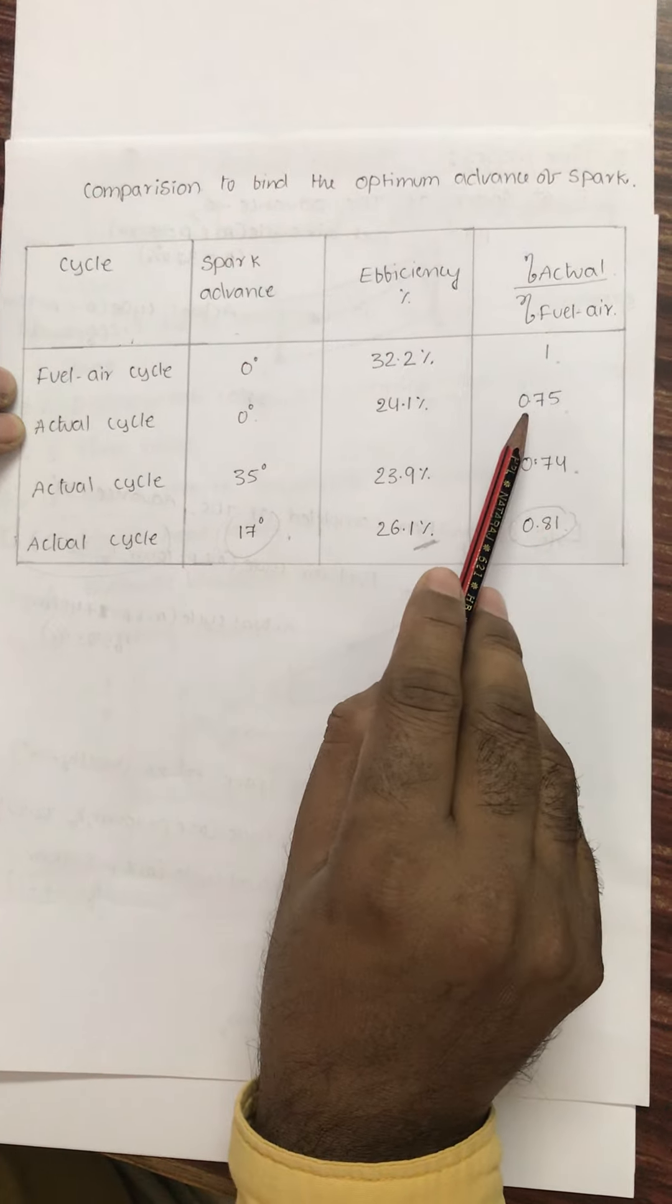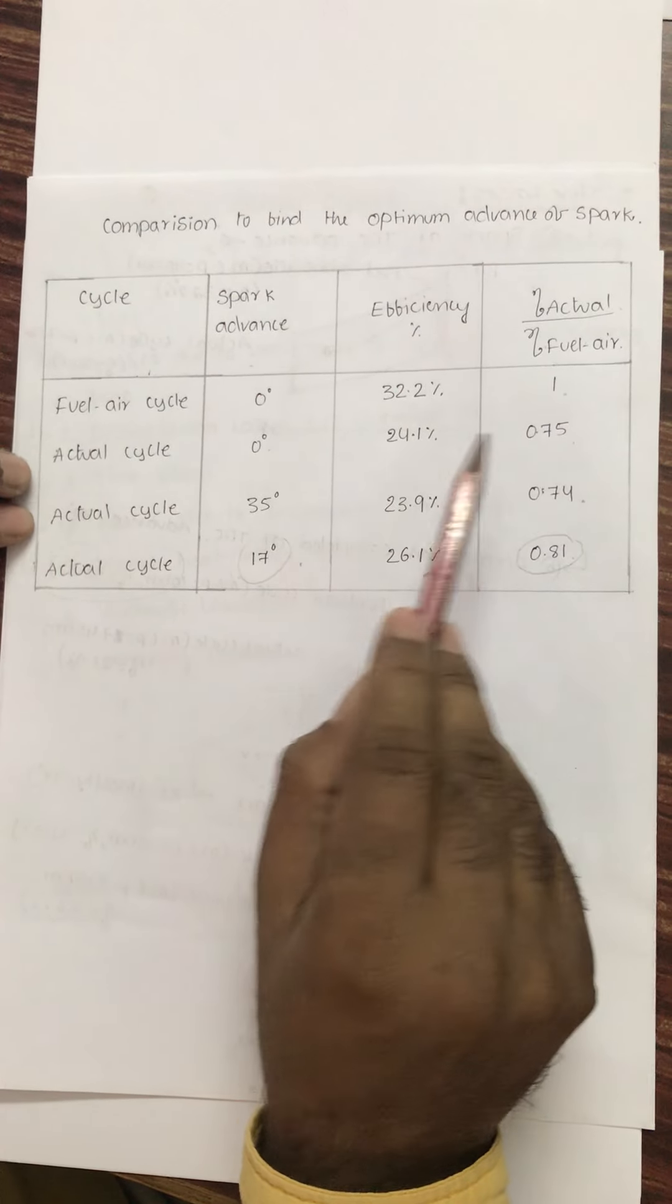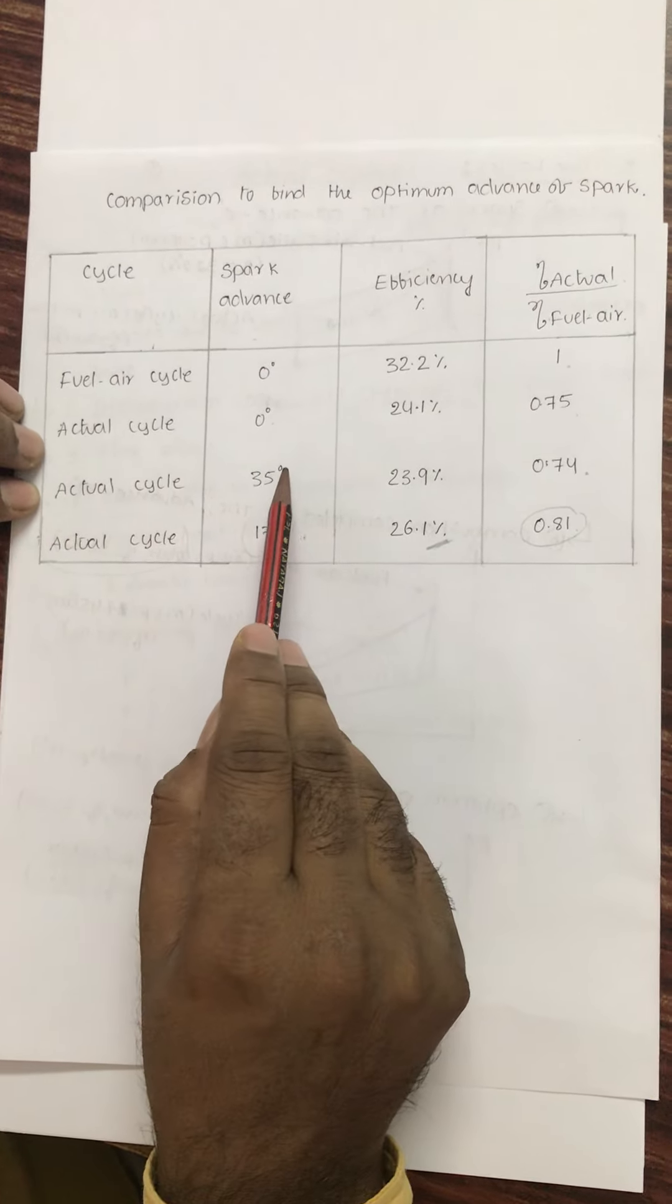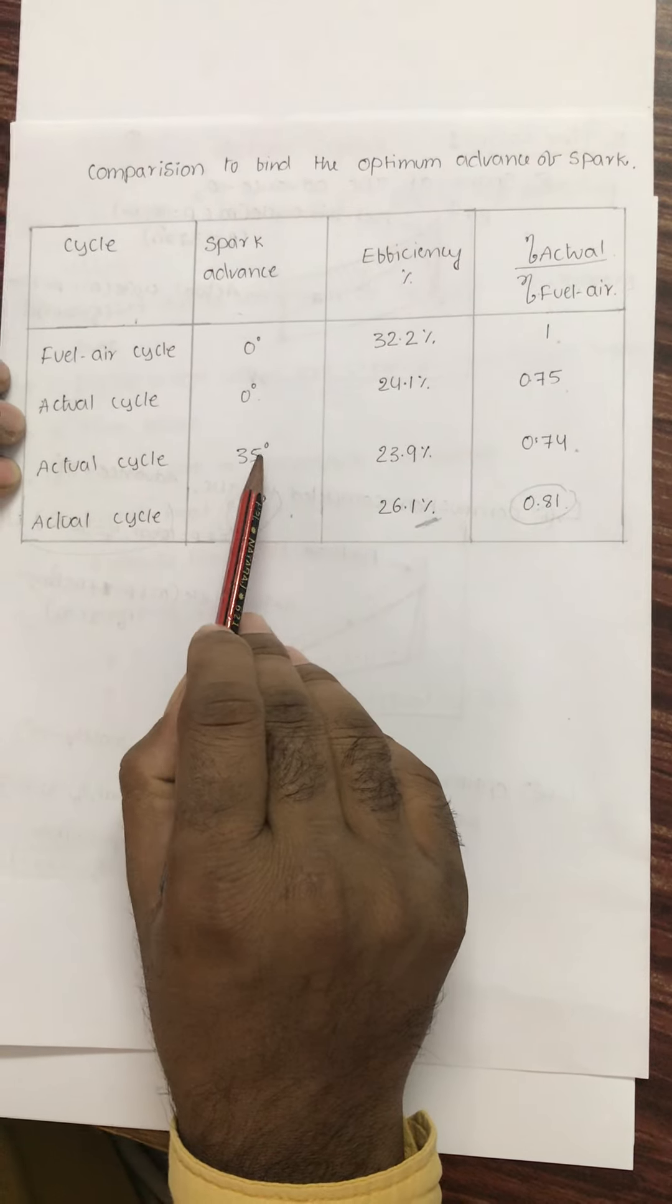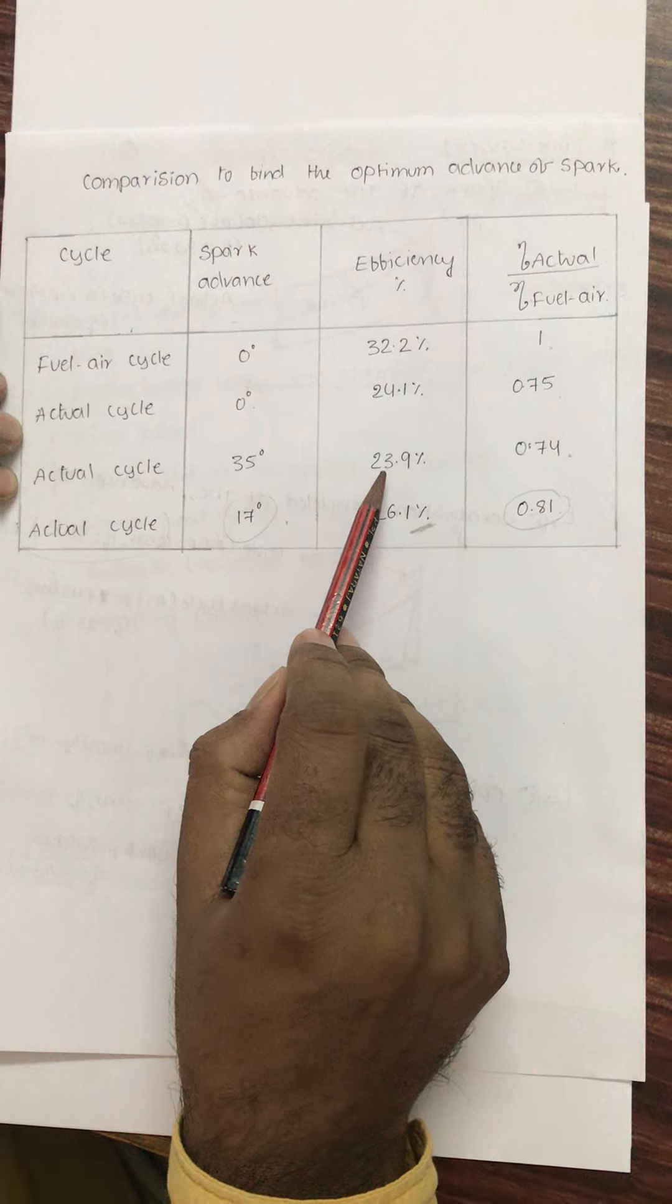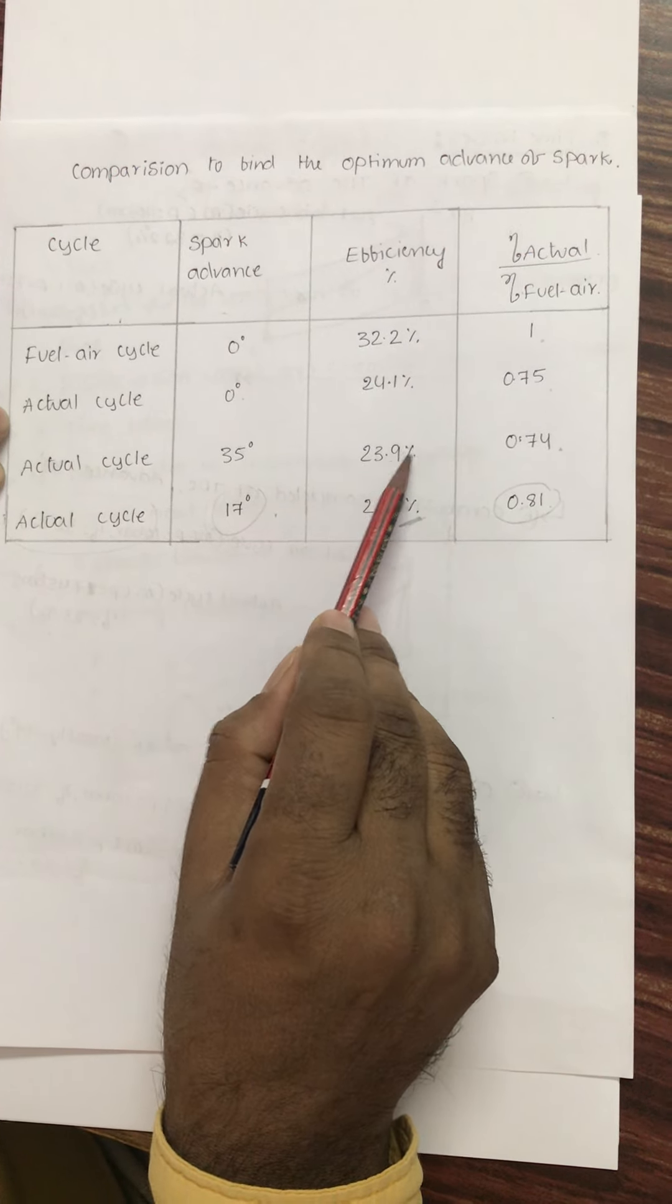It falls to 24.1%, and this ratio is 0.75. Same actual cycle with 35 degrees of cranking - that is before top dead center we are giving the spark - so the efficiency is further reduced to 23.9%.